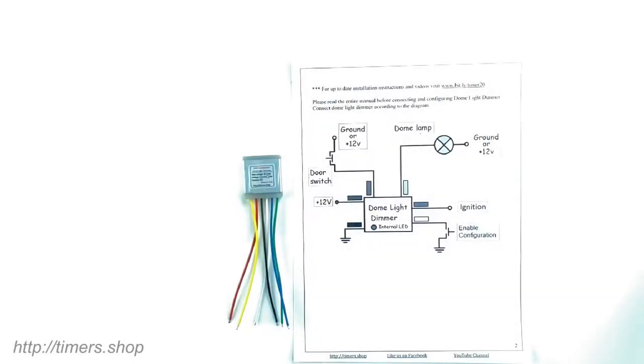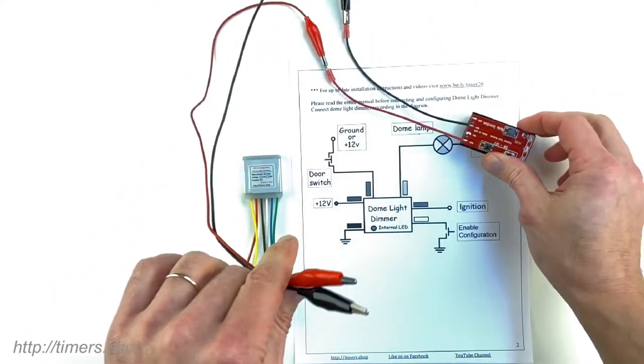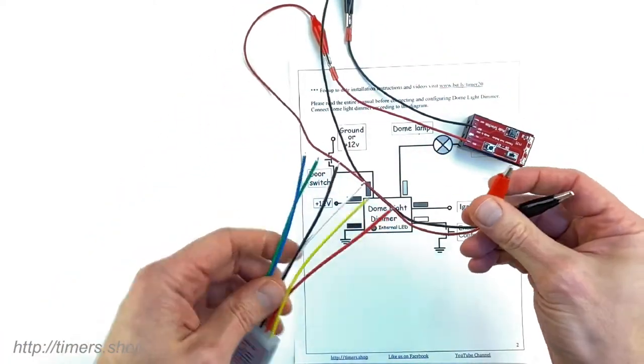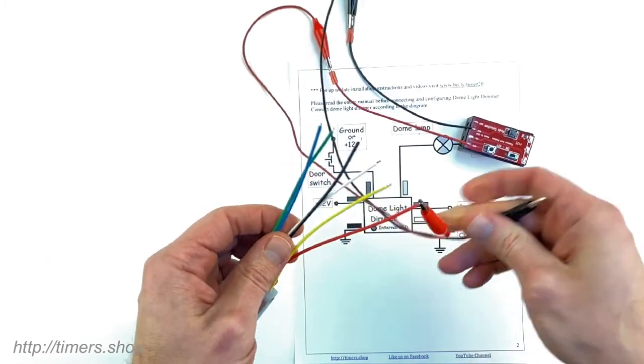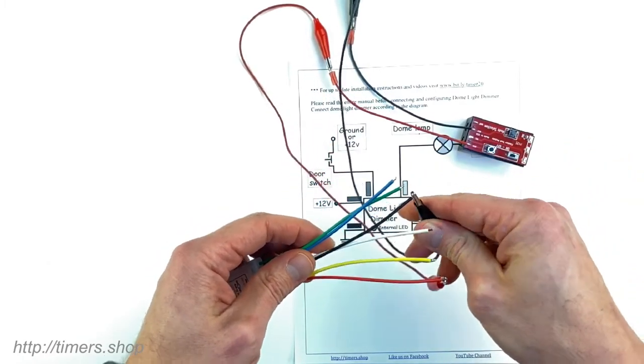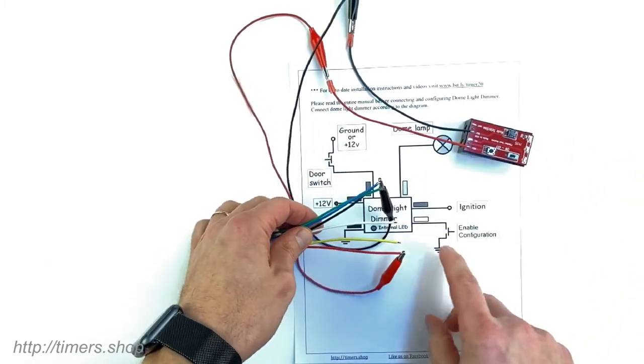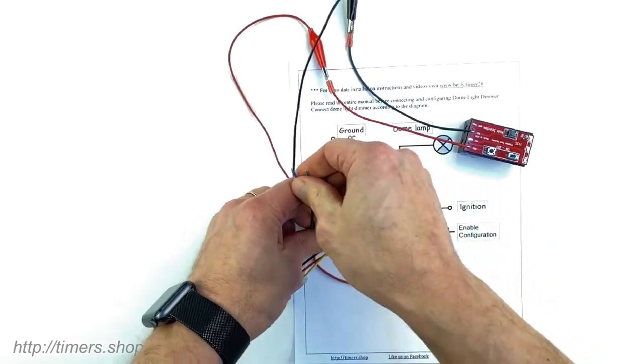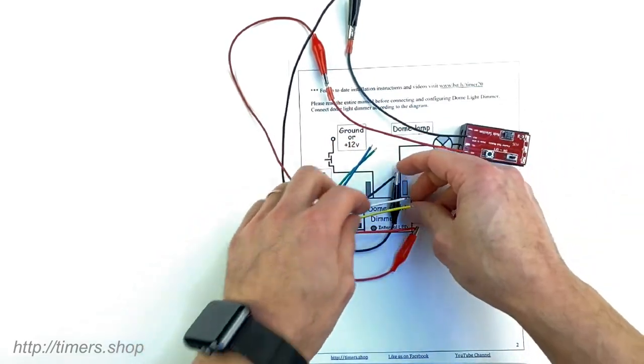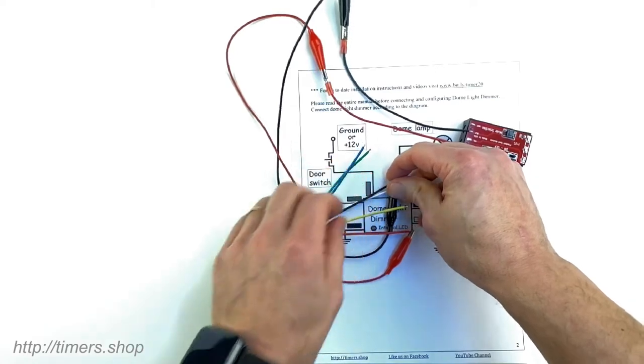Let me show you how to configure all the parameters of the dome controller. I have a 9-volt battery here. I'm going to connect power to the module, and to go into configuration mode we need to ground the white wire. I'm going to supply power and ground the white wire for just a second.